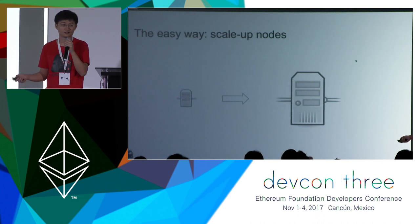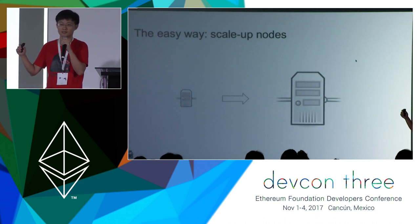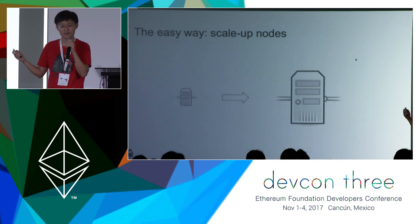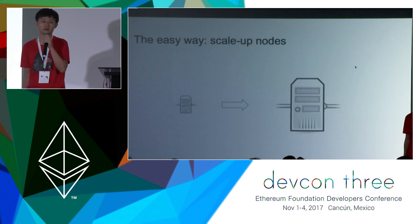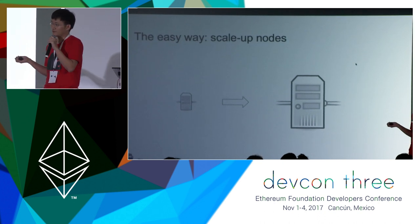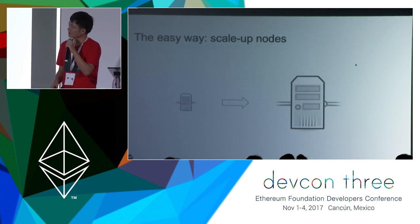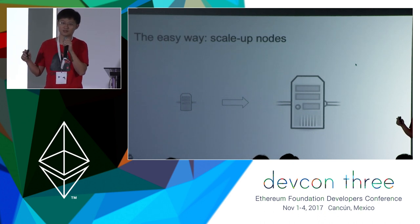The other way — the easier way — is to scale up. If the throughput of the whole network is the same as a single node, what if we just upgrade the nodes? We can use a workstation or even a mainframe instead of a laptop to run a node. Then the throughput of the whole system will naturally increase. That's the solution promoted by some big names in this industry.